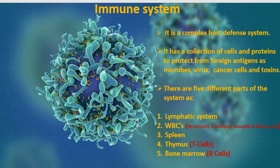White blood cells, also called leukocytes, are cells of the immune system involved in protecting the body against both infectious diseases and foreign invaders such as microbes, toxins, and viruses. These cells include neutrophils, eosinophils, basophils, and monocytes, which we will discuss in later slides.